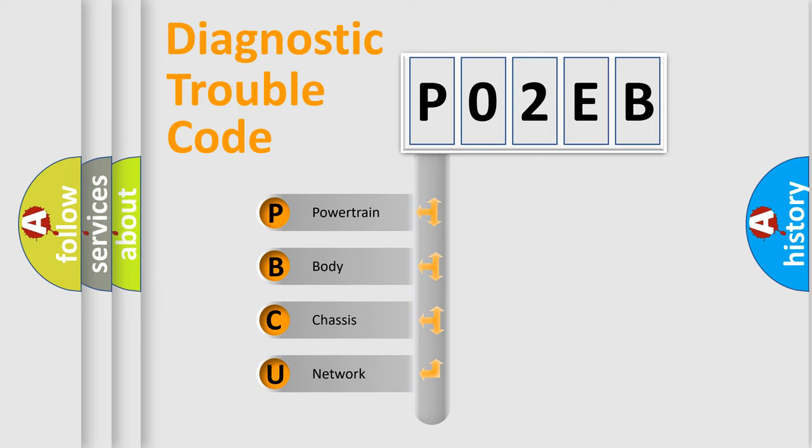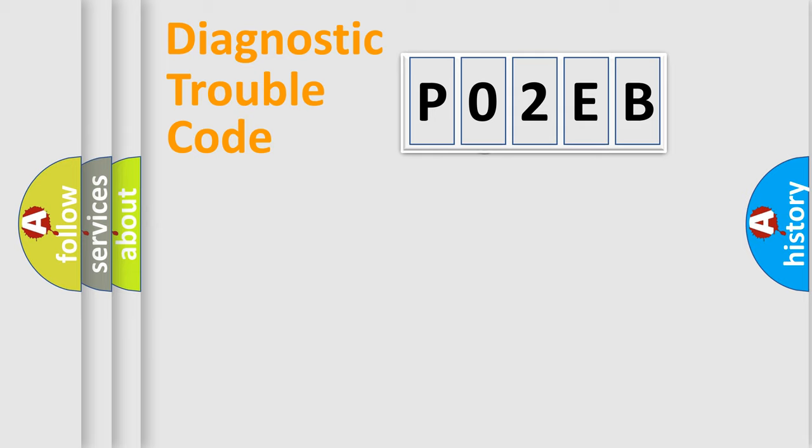We divide the electrical system of the automobile into four basic units: Powertrain, Body, Chassis, and Network. This distribution is defined in the first character code.